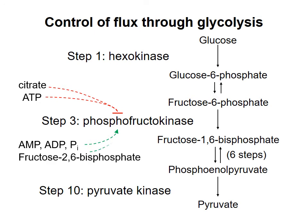Finally, fructose-2,6-bisphosphate activates phosphofructokinase. This compound is not an intermediate in glycolysis, but its concentration increases in response to the hormone insulin in the bloodstream, which is a signal that blood glucose concentration is high. So this allosteric regulation by fructose-2,6-bisphosphate is a way for insulin in the blood to affect energy metabolism in the cell by increasing flux through glycolysis in response to high blood glucose.